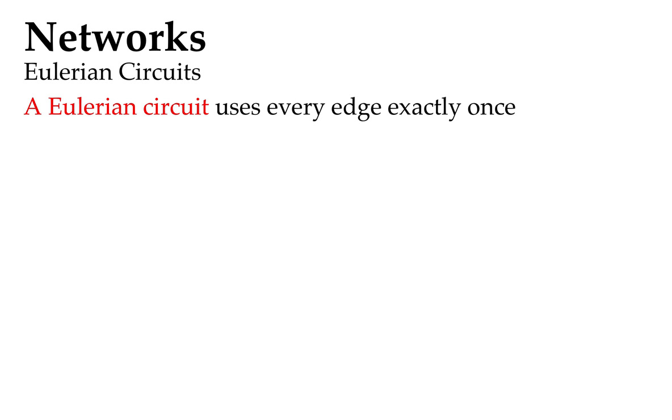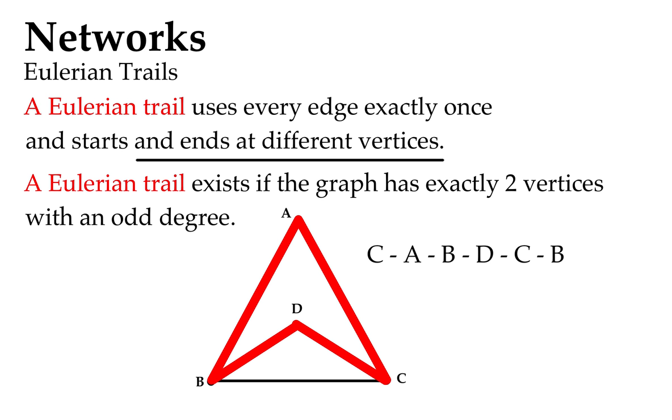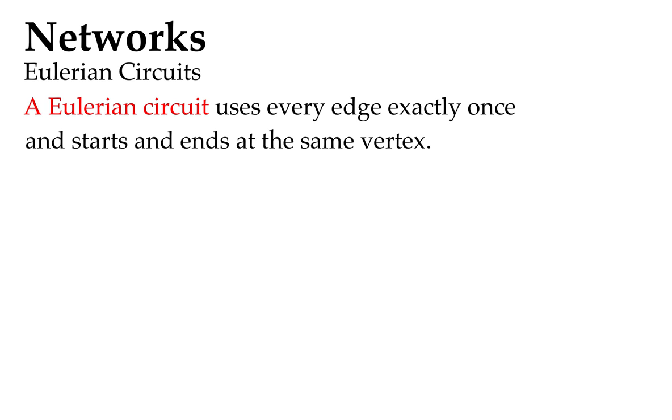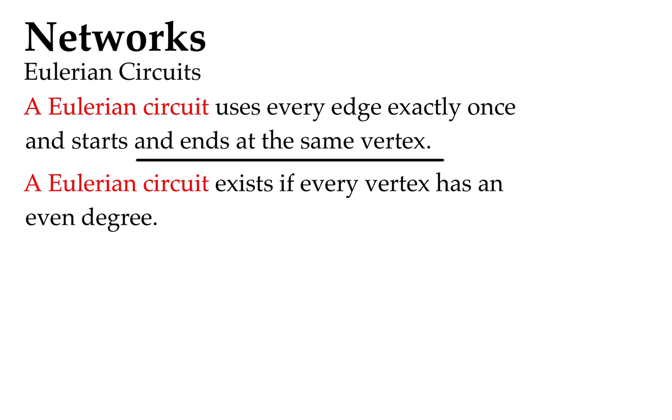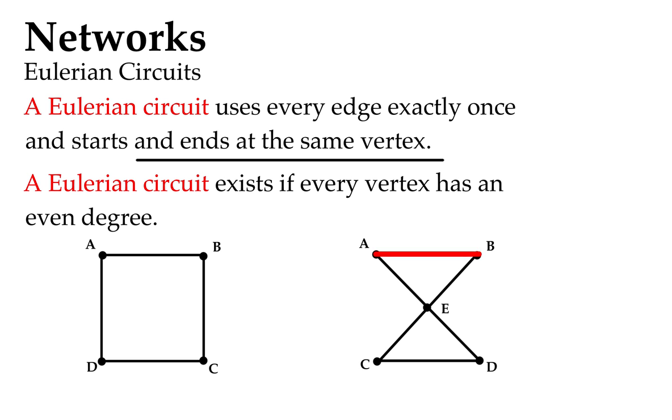Eulerian circuits uses every edge exactly once again, but starts and ends at the same vertex. That's the difference: different vertices for Eulerian trails, same vertex for start and finish for Eulerian circuits. It's got a degree condition there that you can check out as well.